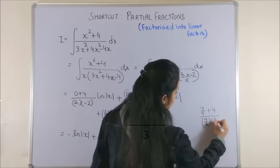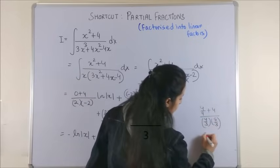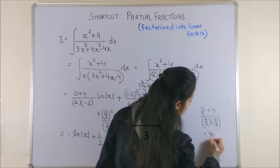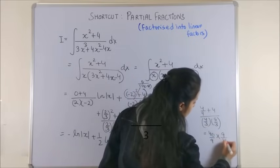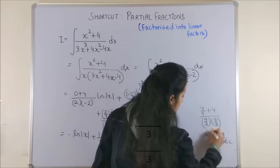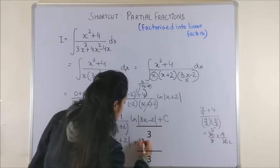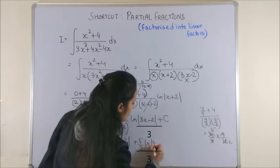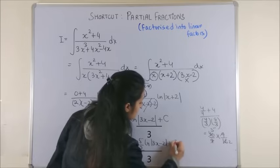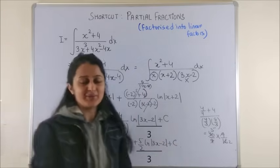And lastly, on solving this we have four by nine plus four, four by three upon four by three into eight by three. Once you take the LCM, you get forty by nine, and here we have nine by sixteen, which would be just five by two. So plus five by two log mod three x minus two plus c, and that's the required answer.